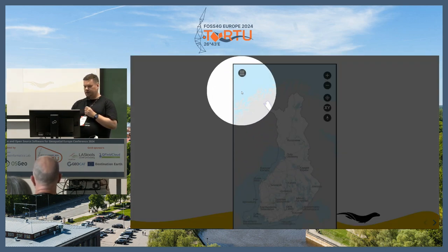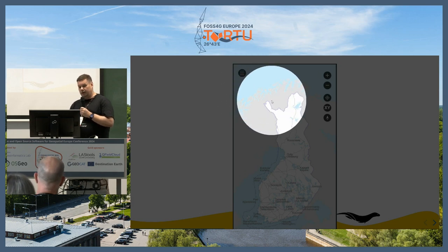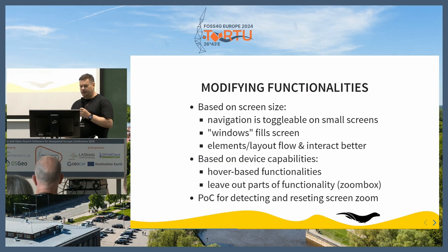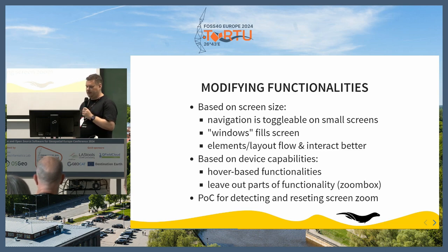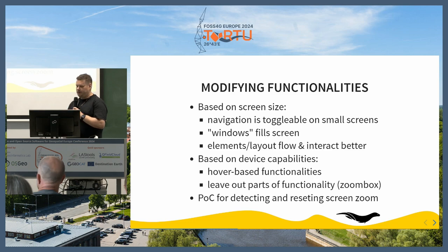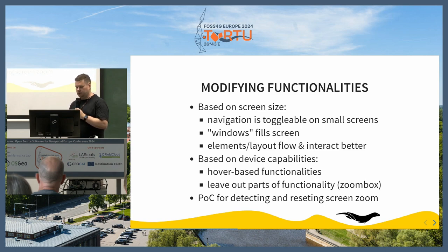We have a new button that you can toggle the menu and gain access to the functionalities that were previously on the left-hand menu. We modify the software based on screen size, so the navigation is toggleable — it's easier to see the map. Before, on a mobile phone, you mostly saw the menu, not the map, which wasn't great for mobile users. Most of the user interface, when you open some functionality, opens in a window on top of the map. For mobile users, that fills the screen, so it's more usable for mobile — it takes all the screen space available to show a better UI.